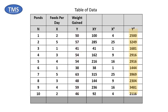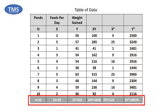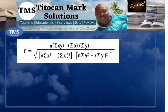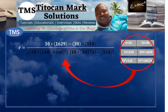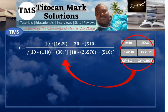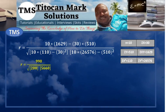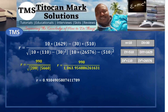Add up each data column to obtain the sigma summation or total sums. These total sums are the basic means for calculating Pearson's correlation coefficient. Substitute these total sums into the formula accordingly. When you evaluate the numerator and the denominator, and multiply the two terms inside the square root of the denominator and take the square root, you then divide the numerator by the denominator to finally get the Pearson's correlation coefficient R. You can reduce the value to two decimal places to get 0.93.